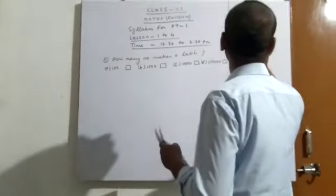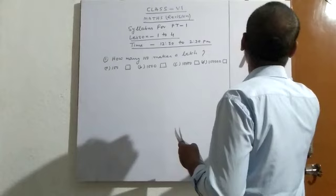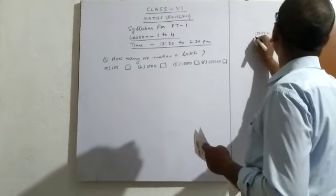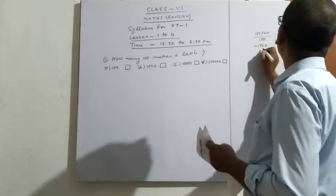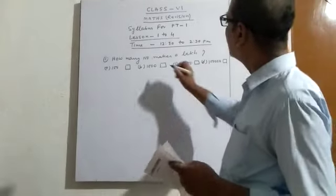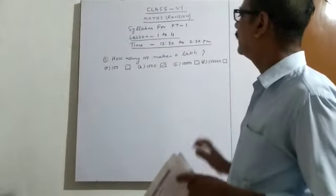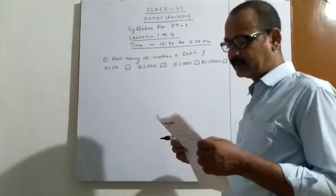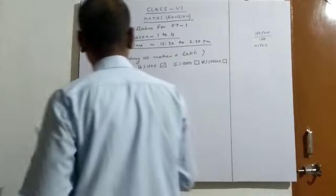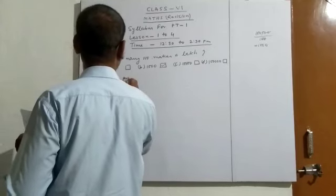So how many hundred makes a lakh? 1 lakh, this is 1 lakh. How many hundred makes a lakh?